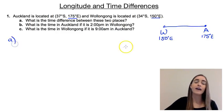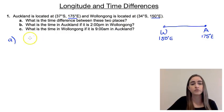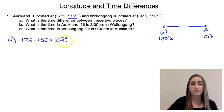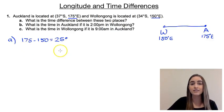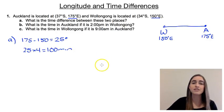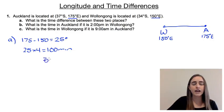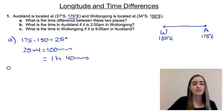For Part A, the first thing we need is the difference in longitude: 175 minus 150 gives us 25 degrees. We know every one degree is four minutes, so 25 times 4 gives us a 100 minute time difference, theoretically, between Auckland and Wollongong. Converting to hours and minutes, that's one hour and 40 minutes.